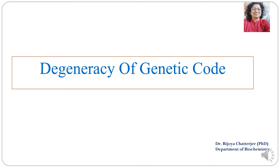Hello everyone. In continuation with the wobbling hypothesis, here is the second lecture or discussion on genetic code. In this topic, we will be discussing about another feature of genetic code, which is known as the degeneracy of the genetic code. So the genetic code is known to be degenerate. Let us try and understand what is a degenerate genetic code.